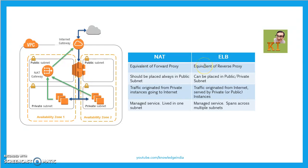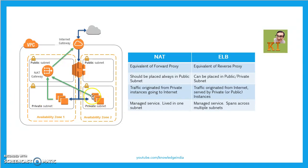We are comparing NAT and ELB. NAT is Network Address Translation, ELB is Elastic Load Balancing. In this particular architecture we have an ELB and a NAT gateway. You can see servers — our web servers — running in the private subnet, so they don't have a public IP. But our website is being served from here, and we have placed an ELB in the public subnet.